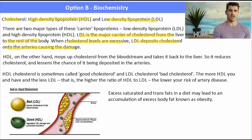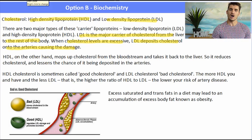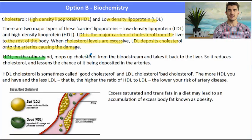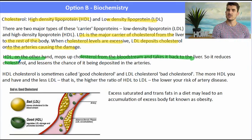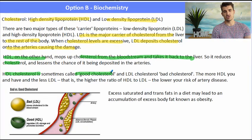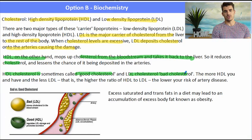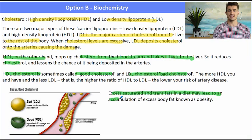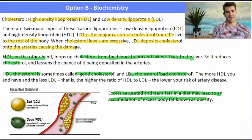When cholesterol levels are excessive, the low density lipoprotein deposits the cholesterol on the arteries and it starts to block up your arteries. High density lipoprotein mops up that cholesterol and takes it back to the liver. So it actually reduces the cholesterol in your bloodstream and reduces the chance of it being deposited in arteries.